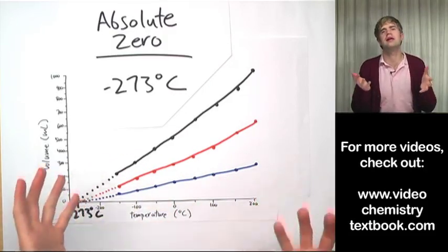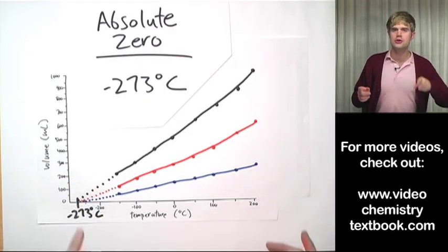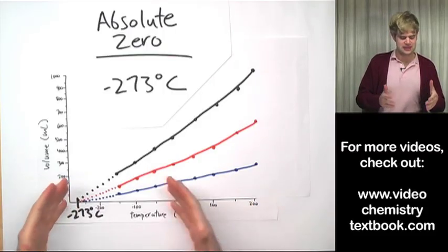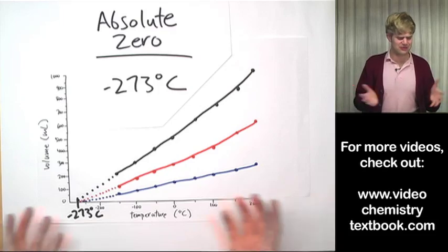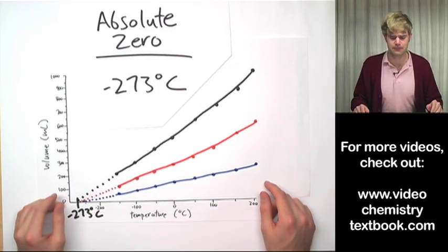right? What would it mean if a gas sample had a volume of like negative 20 milliliters, right? So based on that, scientists are convinced that you can't get any colder than absolute zero because then you'd have like negative volumes for a gas. This line would keep going down here and that just wouldn't make any sense, okay?